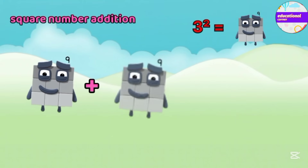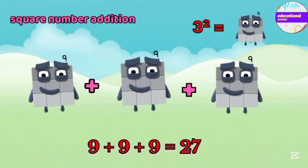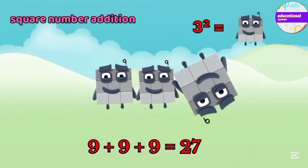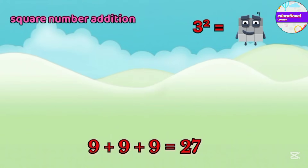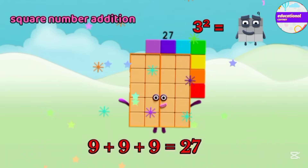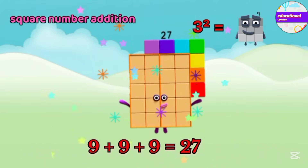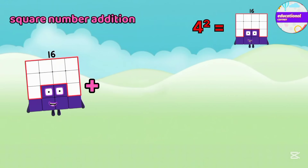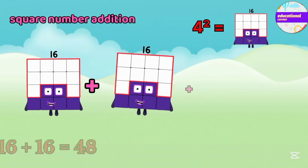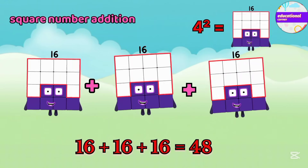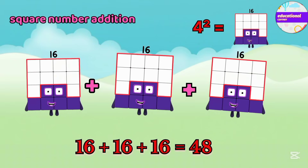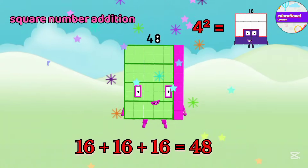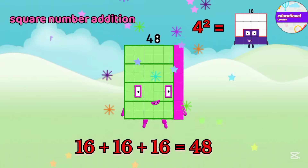The square of three equals nine. If we add three times nine, we get 27. Four squared is 16; we add 16 three times, so we get 48.